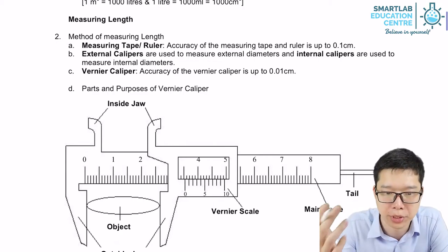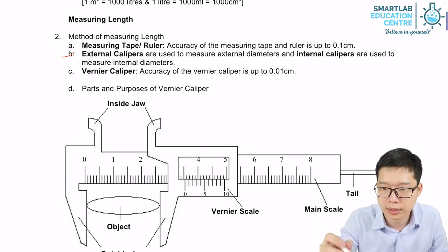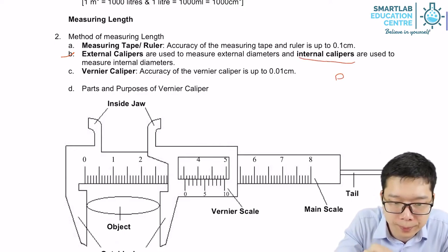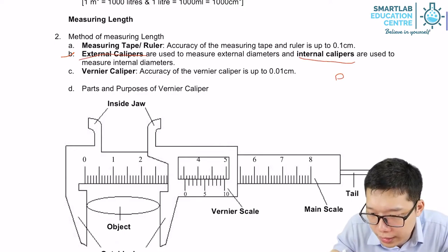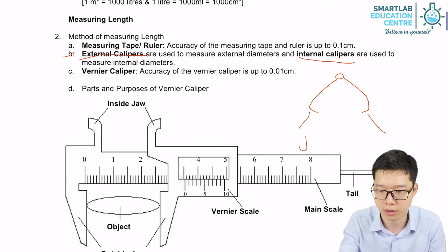The second measuring tool is external calipers. External calipers or internal calipers look like this form. They have two jaws, over here there are jaws.